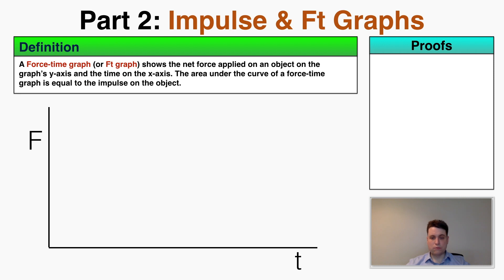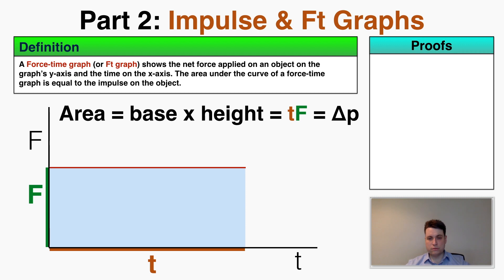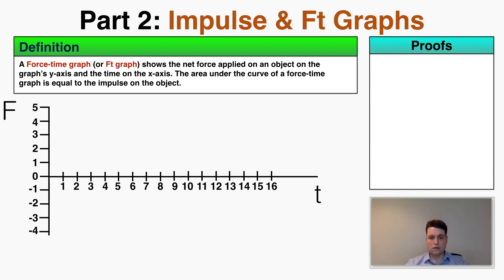Now moving on to force-time graphs. A force-time graph shows the net force on the y-axis and the time on the x-axis. The area under the curve of a force-time graph equals the impulse on the object. For a constant force, the area is a rectangle with height equal to the force and width equal to the time, so the area is force times time — which equals the change in momentum, or impulse. These graphs can look complicated, but it never gets more complex than solving for triangles and rectangles.